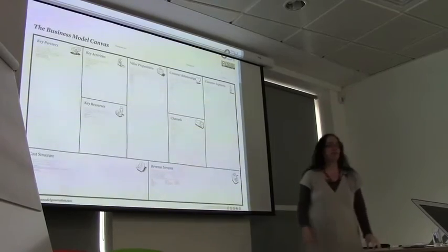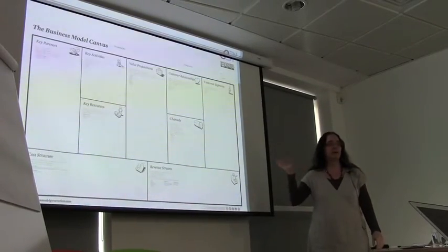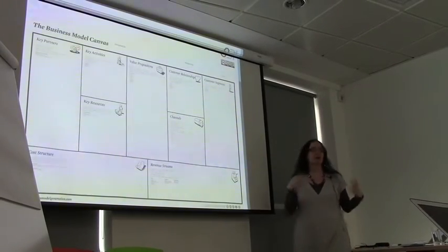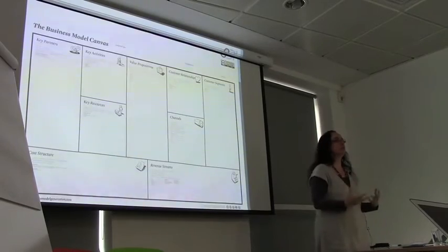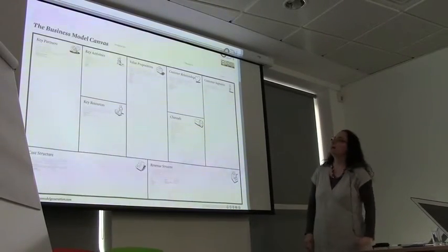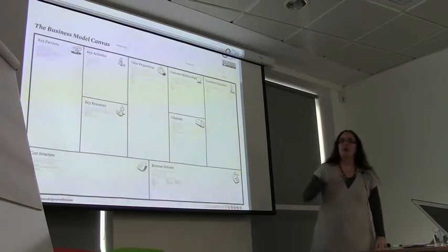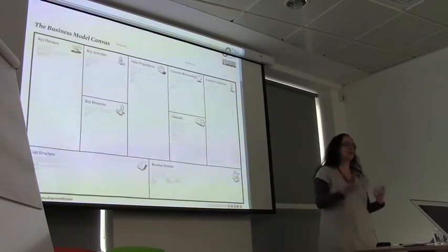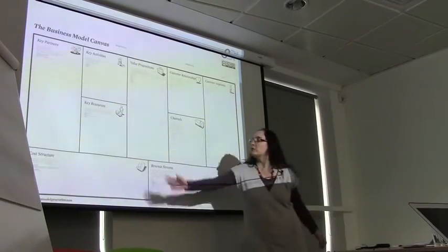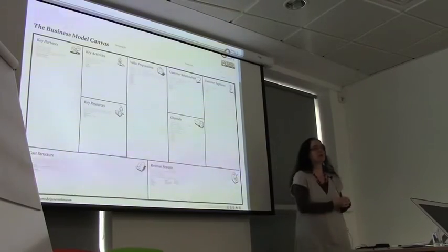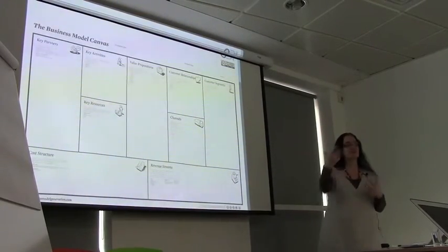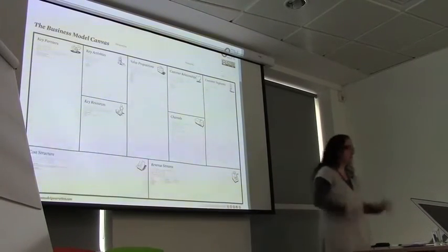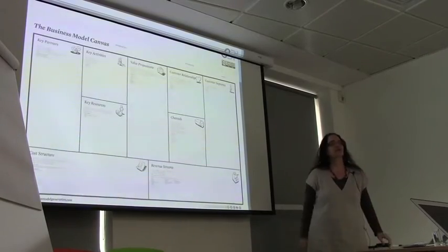I'm going to talk about each of those in turn, and as I'm talking about it I'm going to use the business model canvas. It's a way of assessing the kind of business model that you are putting together. You think about what partners you have, what activities you're engaging in, what resources you have, and come up with some kind of value proposition which has some cost structure associated with it. You think about your customer relationships, the channels through which you reach customers, and who those customers actually are, and then think about what the revenue streams are.